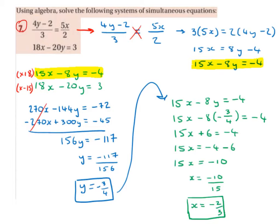Now my x's are the same, and one's a positive, one's a negative, so I can cancel those out. Minus 144y plus 300y is 156y. Minus 72 minus 45 is minus 117. And then minus 117 divided by 156 gives me minus 3 over 4, so I get minus 3 quarters for y.